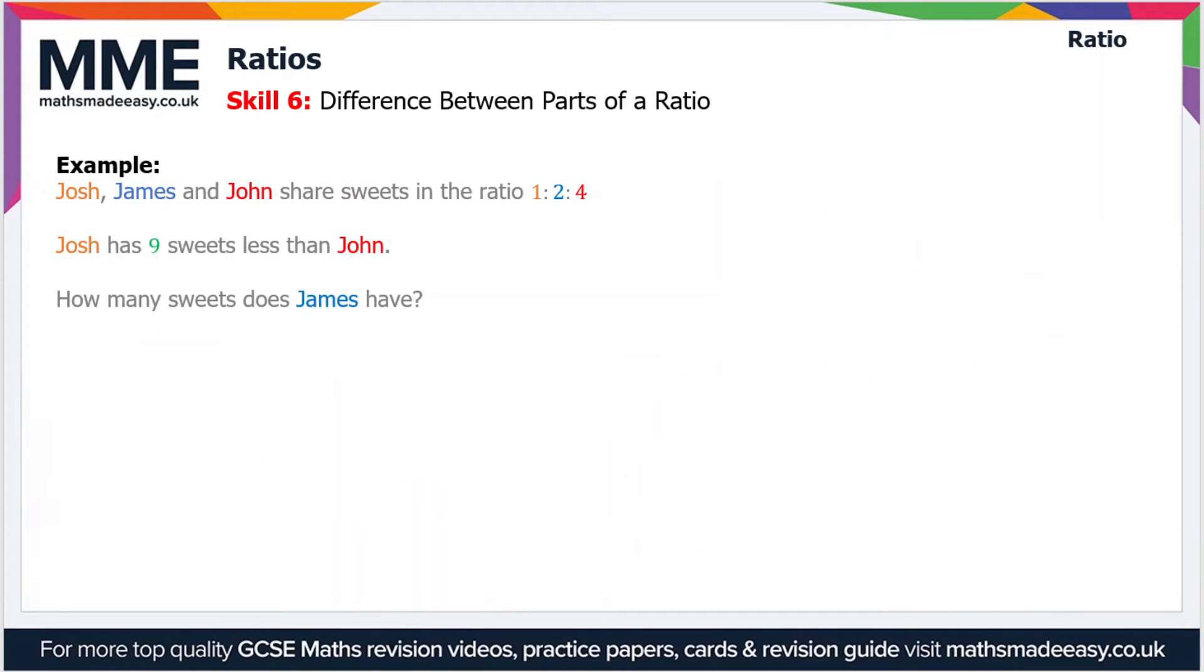Moving on, the next skill we'll look at is the difference between parts of a ratio. In this example, Josh, James, and John share sweets in the ratio 1:2:4. Josh has 9 sweets less than John.